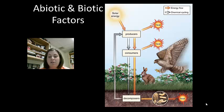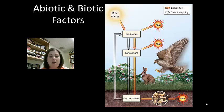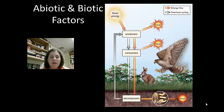Consumers are heterotrophs, which means that they have to consume their food. Herbivores are organisms that consume plants. Carnivores are meat eaters. Omnivores will eat both plants and meat. And decomposers, or detritivores, are going to feed on dead material.